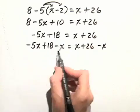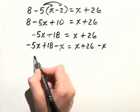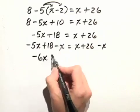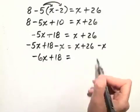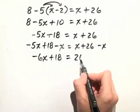On the left hand side, negative 5x minus x gives us negative 6x plus 18, equals the x minus x add to 0, and then we just have 26.